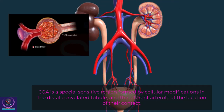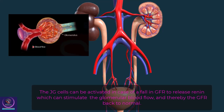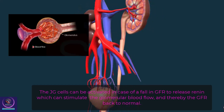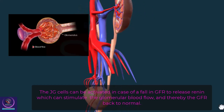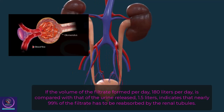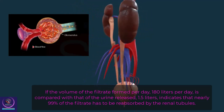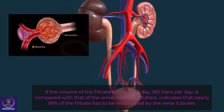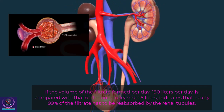The JG cells can be activated in the case of a fall in GFR to release renin, which stimulates glomerular blood flow and thereby restores GFR back to normal. If the volume of filtrate formed per day — 180 liters — is compared with urine released — 1.5 liters — it indicates that nearly 99% of the filtrate has to be reabsorbed by the renal tubules.